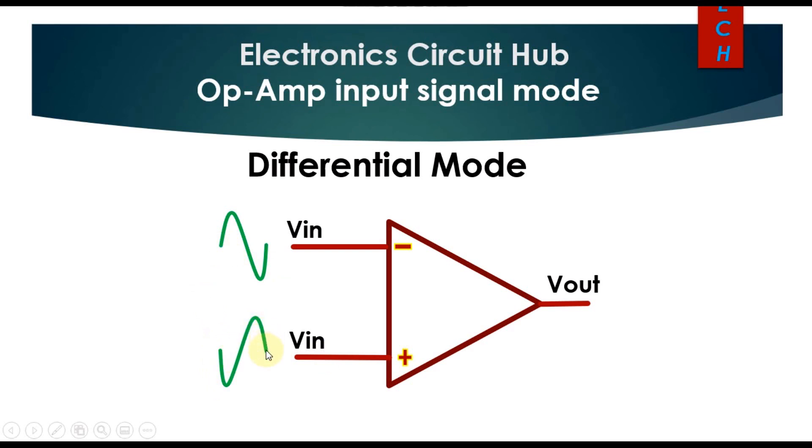You can see here, this is 180 degrees out of phase with this input signal, and the output of this operational amplifier is the difference between these two input signals. This is also called double ended mode.